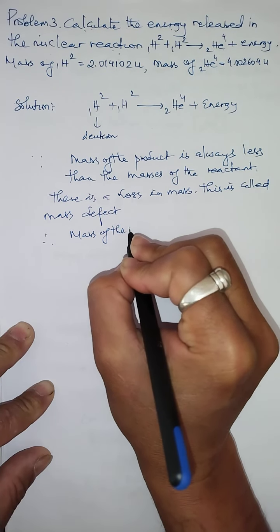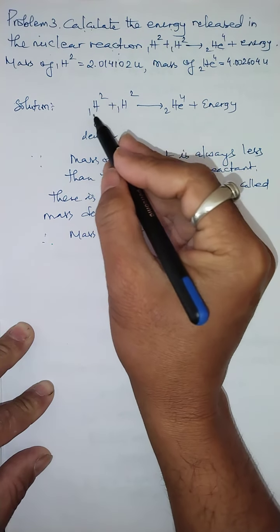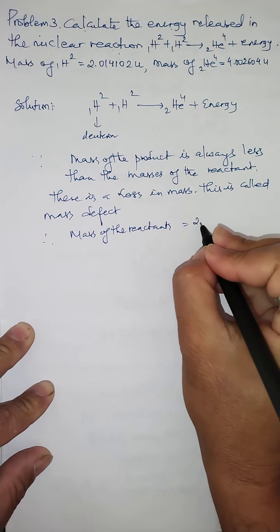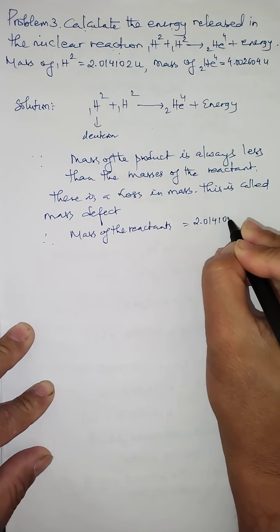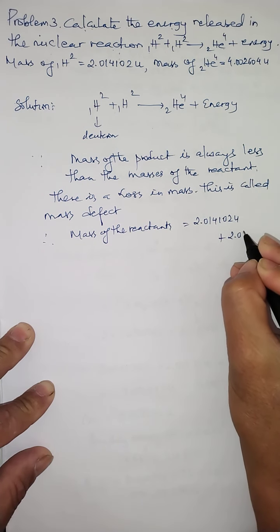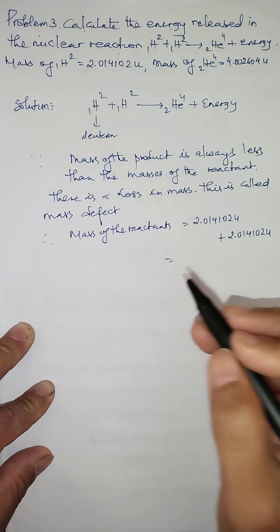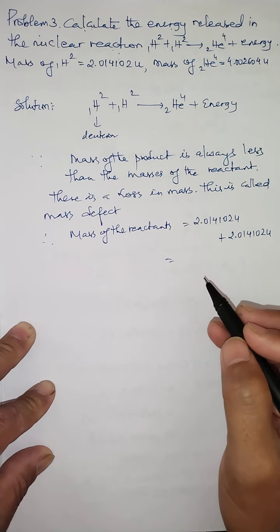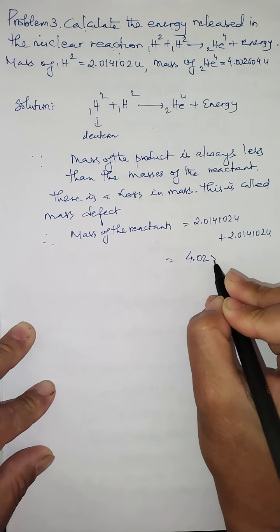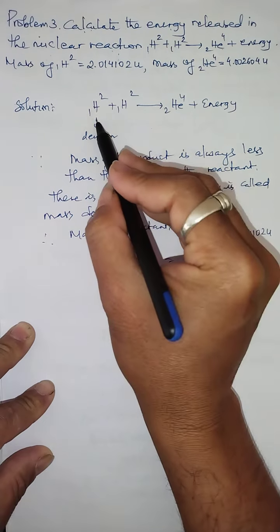Let me calculate the mass of the reactants. Mass of reactants = mass of one deuterium atom plus mass of the other deuterium atom. The mass of one deuterium atom is 2.014102 u, so adding both: 2.014102 u + 2.014102 u gives us approximately 4.028204 u. This is the total mass of the reactants.